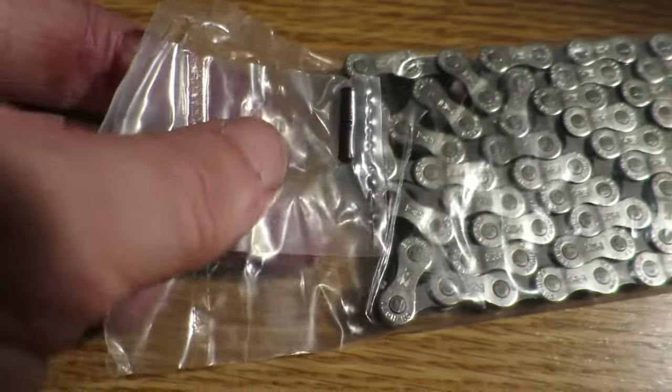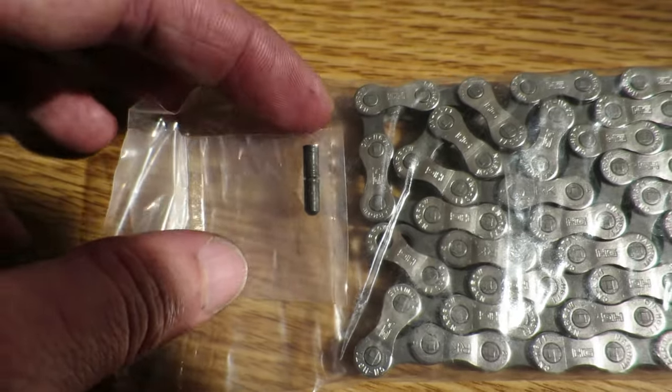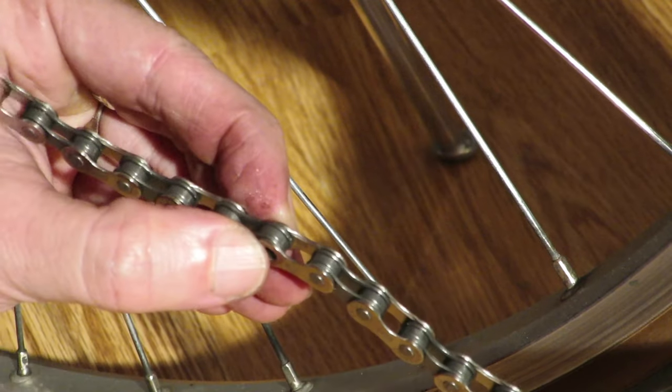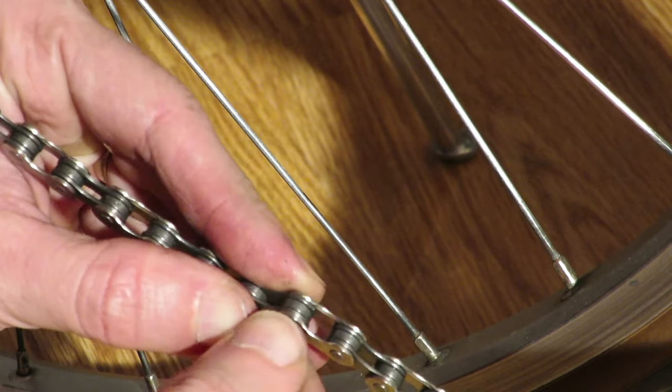The chain pin is made of two pins attached to each other. One end has a flat surface and the other has a cone. The idea is to connect the two ends of the chain and put the pin with the flat part in place.